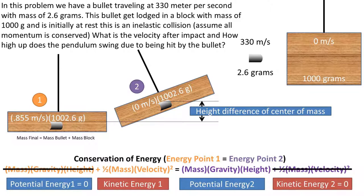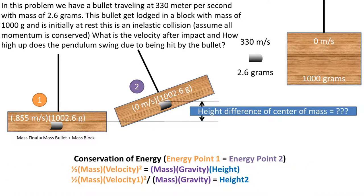This means that the energy at point 1, which is when the block and bullet is all kinetic energy, is equal to the energy at point 2, where the block and bullet is all potential energy. This leaves us with this equation. So now, we need to rearrange the equation to get what we are solving for, height 2, to one side.